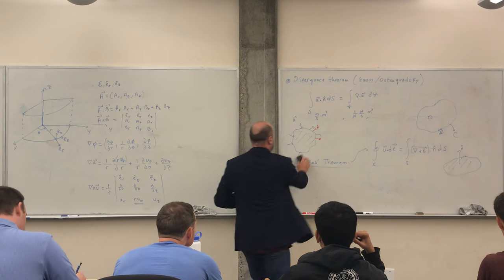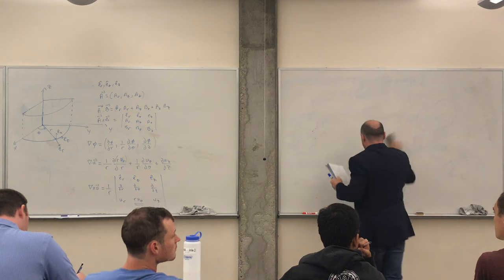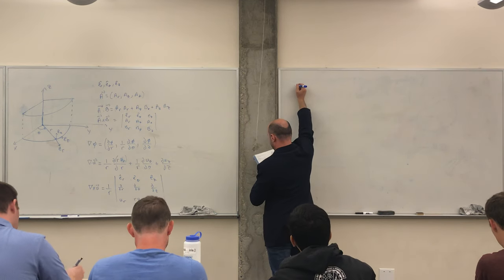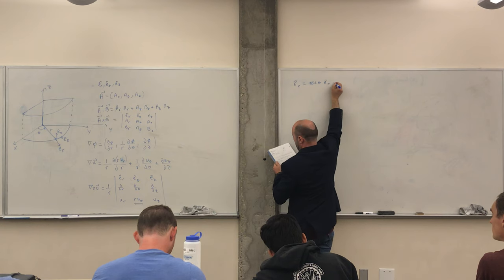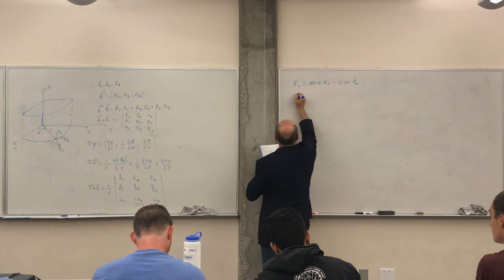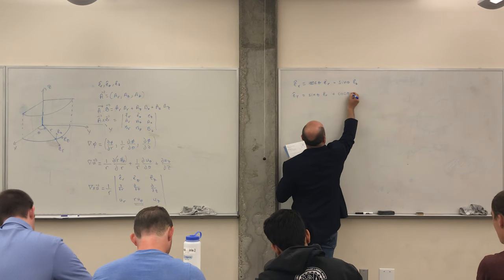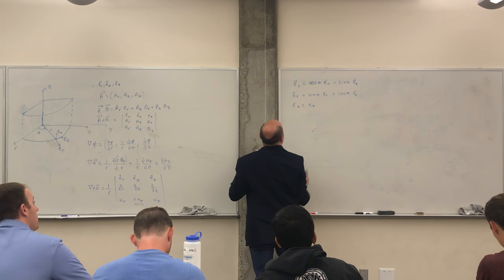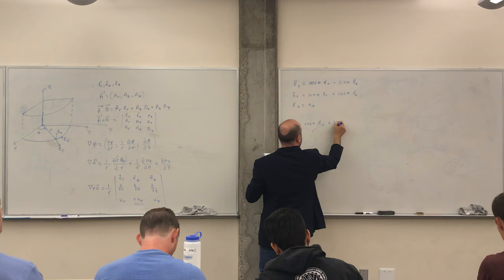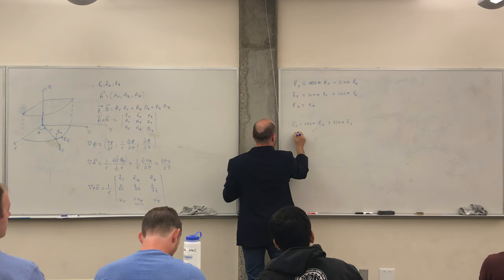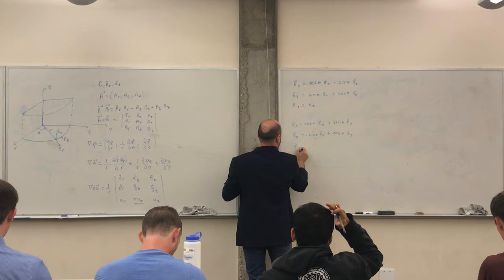Some transformation identities — found in any standard textbook or on Wikipedia. To convert between unit vectors: x-hat equals cosine(theta) e_r minus sine(theta) e_theta; y-hat equals sine(theta) e_r plus cosine(theta) e_theta; e_z equals e_z. And inversely: e_r equals cosine(theta) x-hat plus sine(theta) y-hat; e_theta equals minus sine(theta) x-hat plus cosine(theta) y-hat. These help when transforming between coordinate systems.